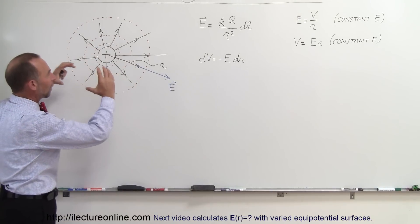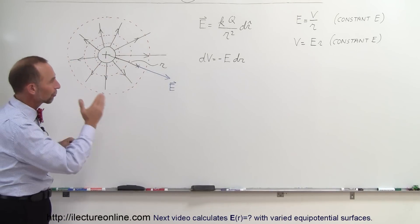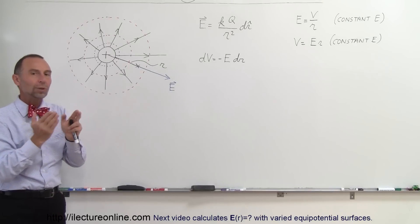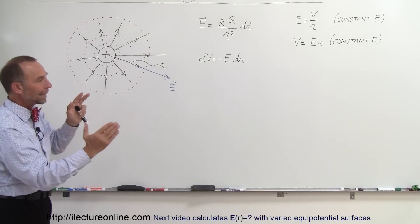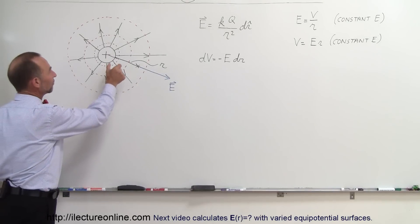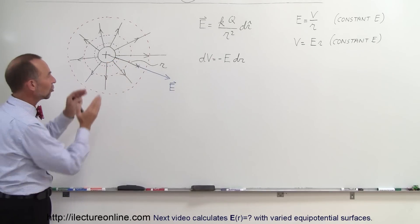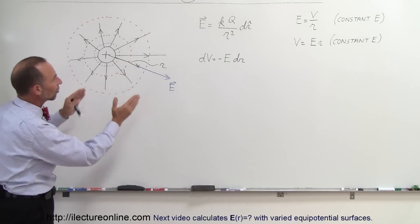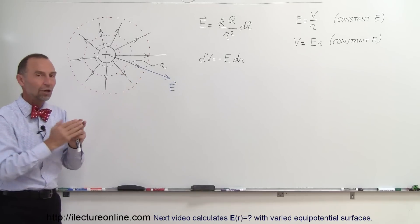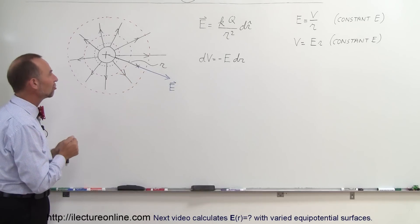You can see here that the equipotential surfaces drawn in red are spheres around the charge. As you go out, since electric field gets weaker and weaker as you go further out, the distances between equipotential surfaces will also increase. Because if the distance between them represents a fixed amount of change in the potential, you have to travel a greater distance through a weaker field to get a similar kind of change in the potential.